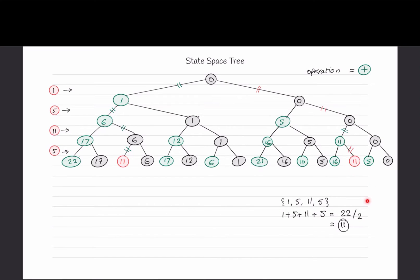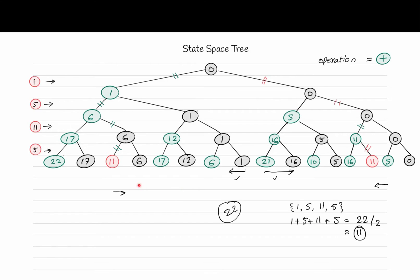One more interesting thing in the state space tree: if you add all numbers from any leaf node going right-to-left on one subtree and left-to-right on the other, you get 22. For example: 21+1=22, 6+16=22, 12+10=22, 17+5=22, and so on.